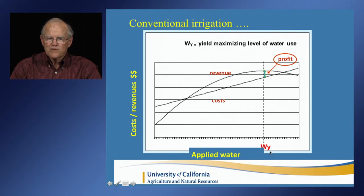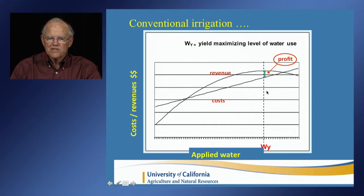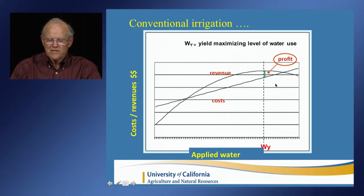The point W-sub-Y represents the applied water level at which we maximize yields. In conventional irrigation, this is the point at which we irrigate, and the profit is the difference between the two curves at that point. This is conventional irrigation.